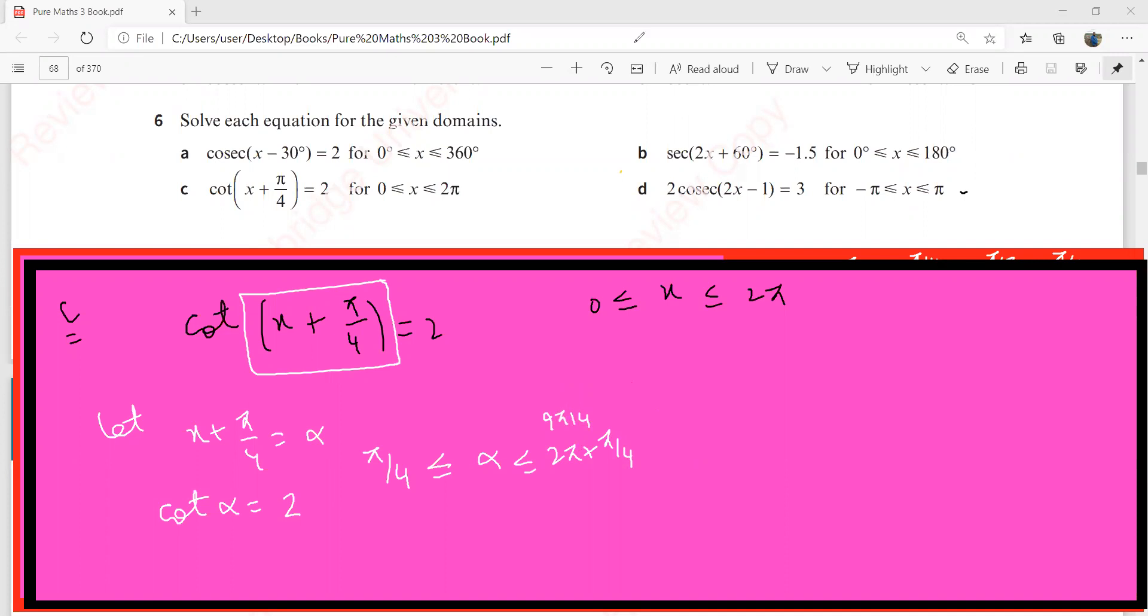I should write the values in decimals. π by 4 is 0.785. The upper limit, 9π by 4, is 7.067. I need to have my answers within these two limits. Cotangent alpha equals 2, so tan alpha equals 1 over 2. Tan is positive in these two quadrants.